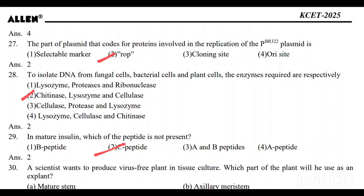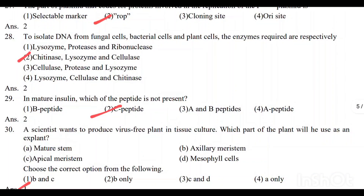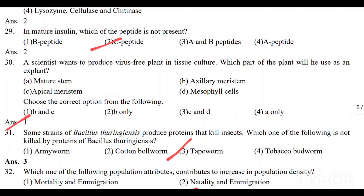Question number 28: To isolate DNA from fungal cells, bacterial cells, and plant cells, the enzymes required respectively are lysozyme, and cellulase. Option 2 is the correct answer. Question number 29: In mature insulin, the C peptide is not present. Option 2 is the correct answer.